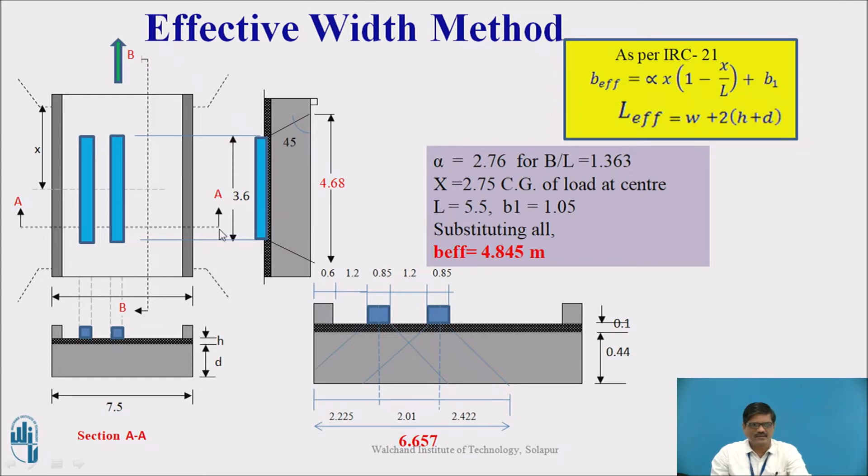In the effective width method, first of all, we shall place those live loads. These blue patches indicate the live load, two patch loads which are being transferred through this military tank, just as we discussed in the previous slide. One patch transfers the load of 350, so 350 and 350, total 700 kilonewton is transferred.